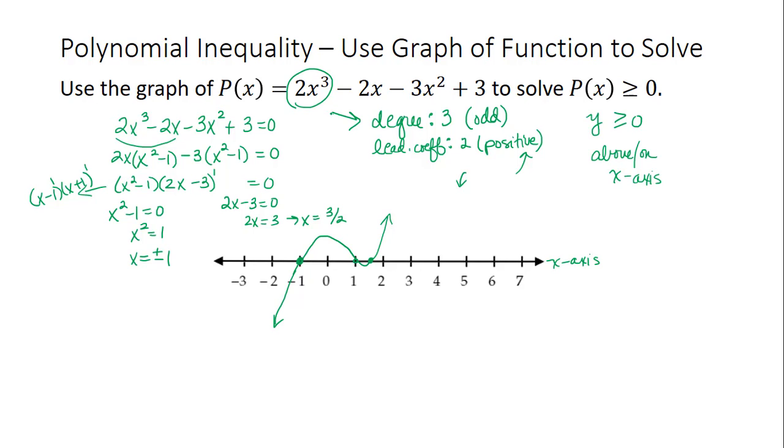This is just a rough sketch using fundamental properties of polynomial functions. Now I have my solution set. I'm finding the values of x where the graph is above or on the x-axis. It's above the x-axis between -1 and 1, and to the right of 1.5. I can include where it's on the axis because of the equal to 0, so I include the endpoints -1, 1, and 1.5.